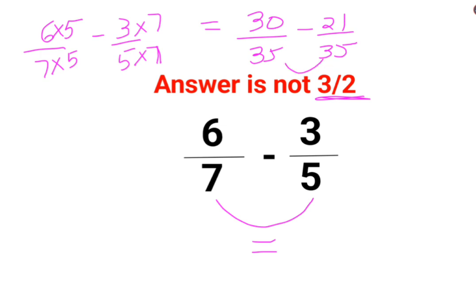Now if you see the denominators are equal. So now I can directly subtract the numerators and the answer for this question is supposed to be 9 upon 35.